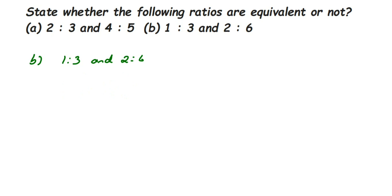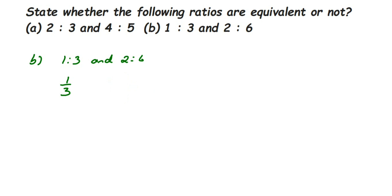Now the other way using LCM: 1 is to 3 is written as 1/3 and 2 is to 6 as 2/6. You can simplify 2/6 directly — cancel 2 from numerator and denominator: 2 ones are 2 and 2 threes are 6, giving 1/3. Since both become 1/3, they are equal. Or you can take LCM of 3 and 6, which is 6.